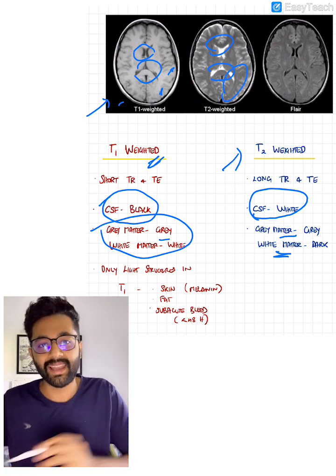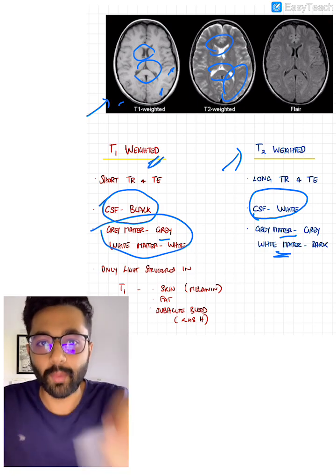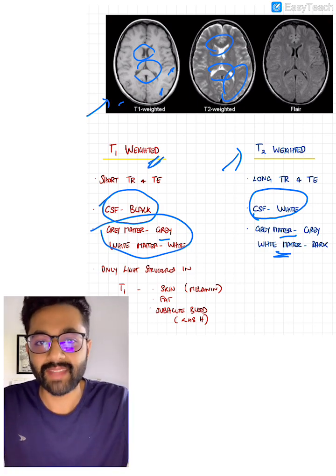Also remember, the skin, fat, and subcutaneous tissue appear light in a T1 weighted image and not in a T2 weighted image. Thank you.